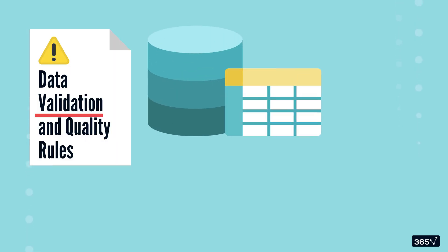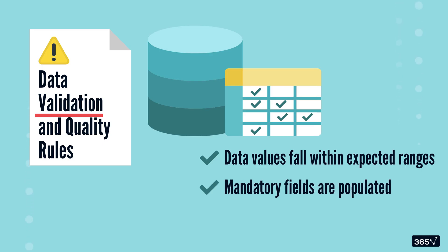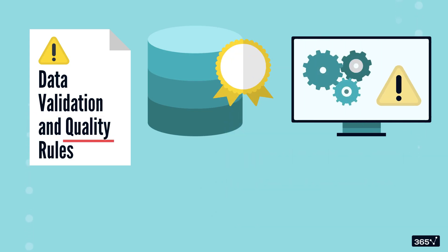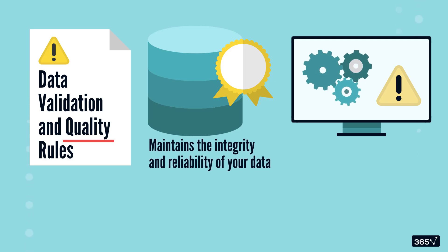Similarly, in data transformation, validation rules check that data values fall within expected ranges, that mandatory fields are populated, and that formats are correct. Data quality checks are automated processes that run after the transformation to help catch errors early on. This step is crucial for maintaining the integrity and reliability of your data.